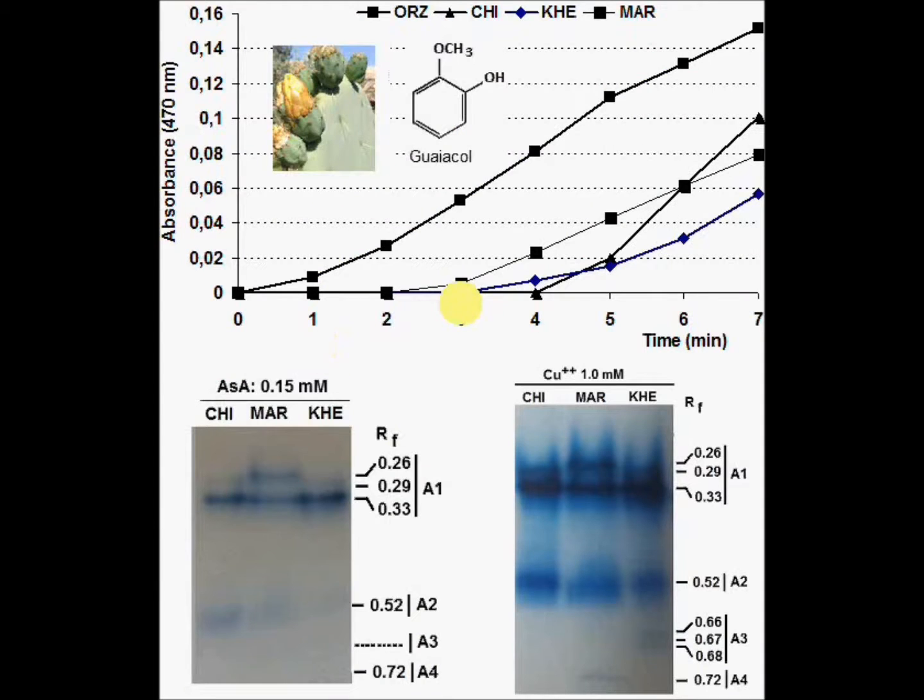The objective of this study is the optimization of quantitative tests of the guaiacol peroxidase of Opuntia ficus indica and also the optimization of the qualitative tests of this enzyme studied by electrophoresis.